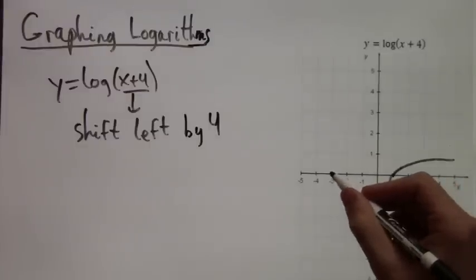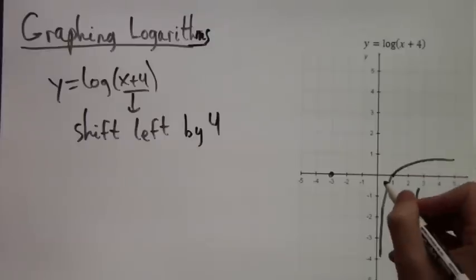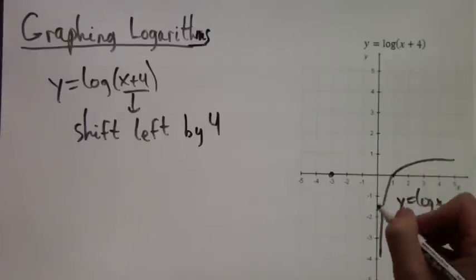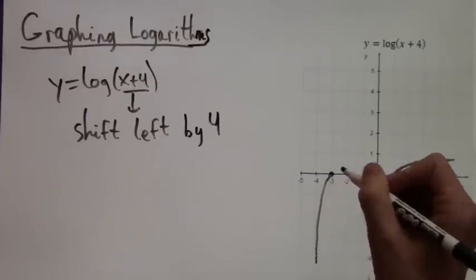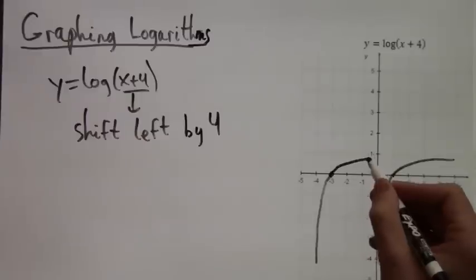Now we're going to shift this by four, so the point (1,0) will be (-3,0) and everything else will be similar. Instead of the y-axis, everything will start close to negative four but not quite at negative four, and it'll keep increasing.